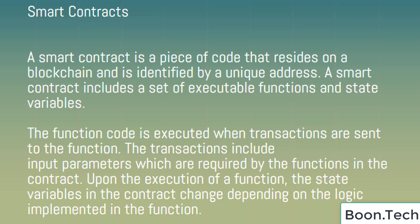Smart Contracts. A smart contract is a piece of code that resides on a blockchain and is identified by a unique address. A smart contract includes a set of executable functions and state variables. The function code is executed when transactions are sent to the functions. The transactions include input parameters which are required by the functions in the contract.